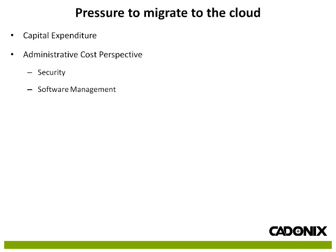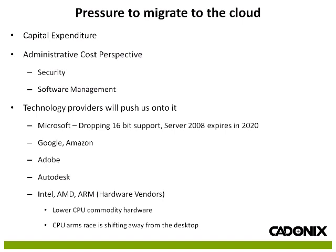Also with software management, you don't have to pay people to go from machine to machine updating them and making sure servers and client PCs are all at the same level. Technology providers themselves are pushing us onto the cloud — Microsoft is dropping support for a number of their service systems, and Google and Amazon want you to use their services. Notably, Intel, ARM, AMD, and other CPU hardware manufacturers want you to use the cloud because people are no longer buying desktop PCs, and the mobile devices they use don't need high-power CPUs. So their main focus is now increasing the density of CPUs on silicon and selling them to the Googles and Amazons of this world, making it very easy for companies to start server farms.